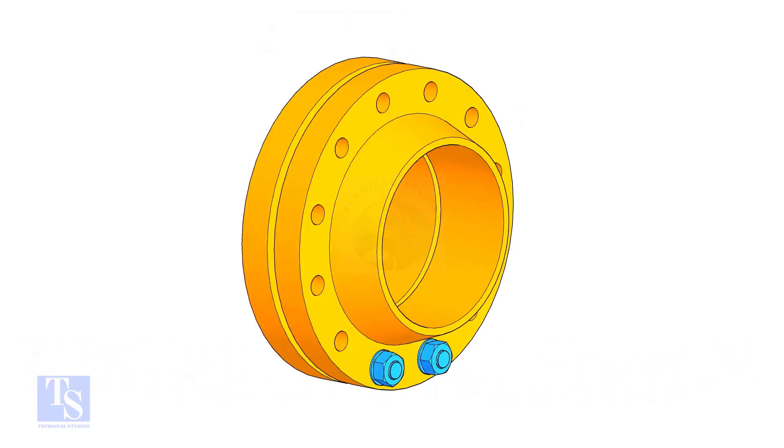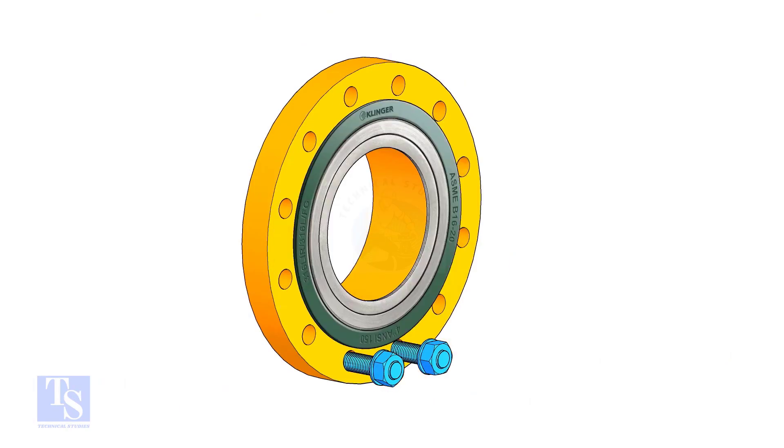Put two bolts in the adjacent bottom side holes. Put the gasket between the flanges.